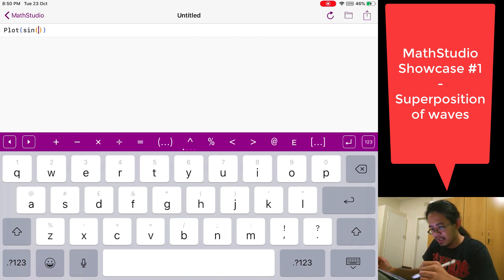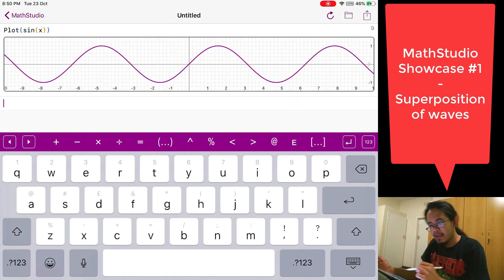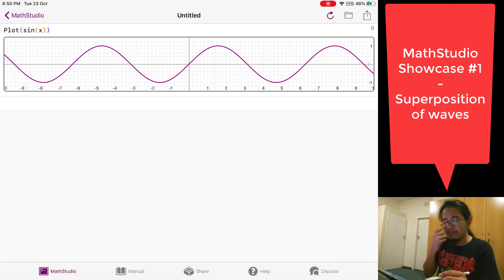So the most basic thing you can do is, for example, you can plot something like sine of x. And you can see right away it plots that function. Very straightforward. You don't need an app for that. You can picture that in your brain.